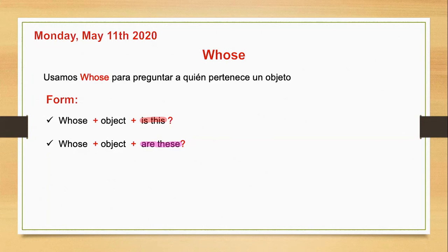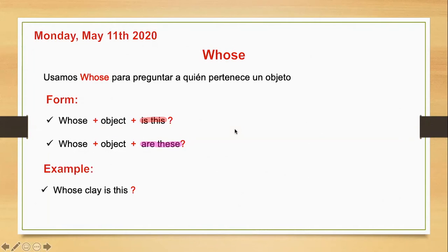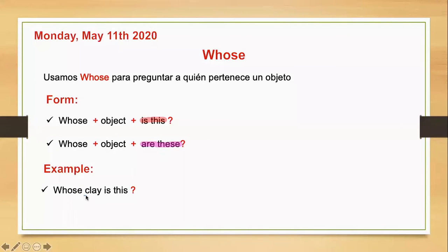Recuerden que la pronunciación de la primera es 'this' y de la segunda es 'these', un poquito más alargado. For example: whose clay is this? Remember that clay means arcilla. Entonces aquí estoy preguntando de quién es esta arcilla. Clay is one thing, so that's why we use 'is this'.